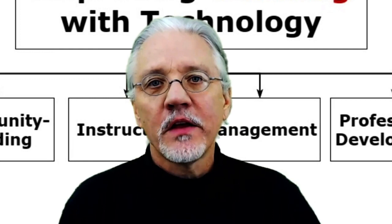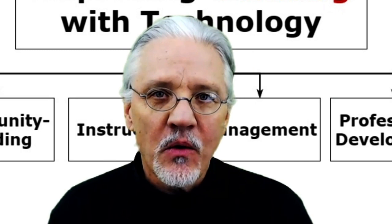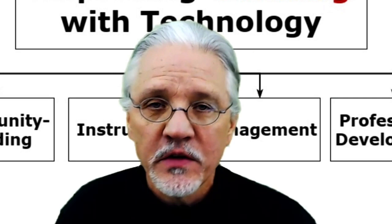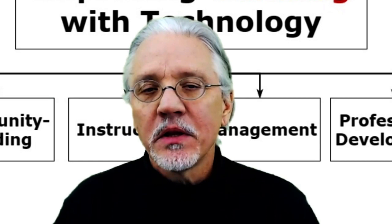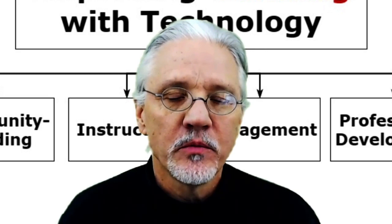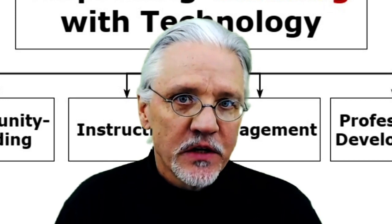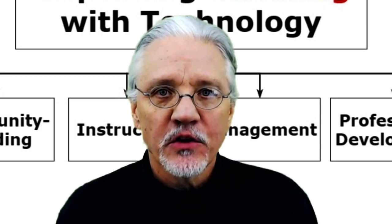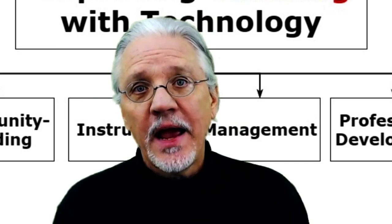Let me introduce you to the course big picture. This is an image you'll see regularly throughout the course. It represents how the skills you're going to be learning are organized into four important and distinct areas — ways in which technology can help you improve your practice as an educator, whether you're a classroom teacher right now or still studying to become one. The first area has to do with community building.